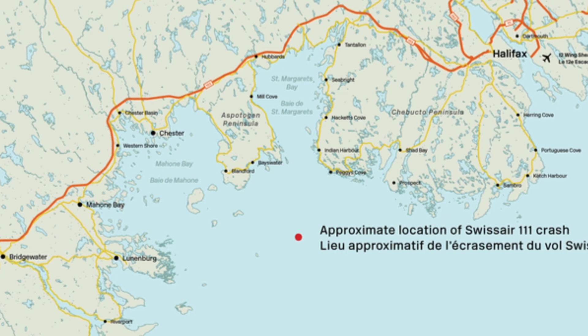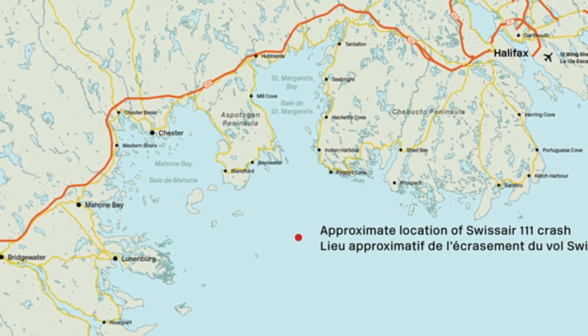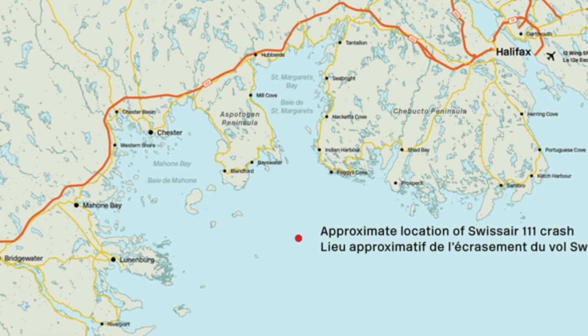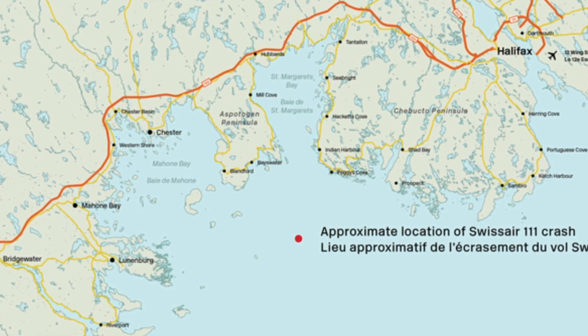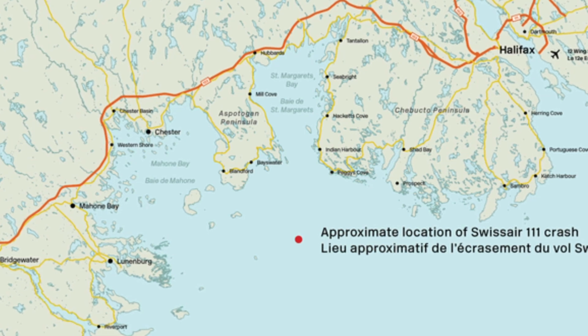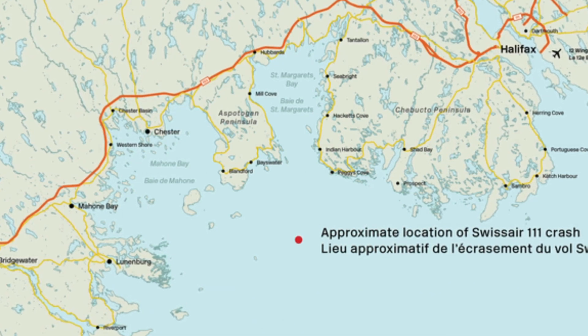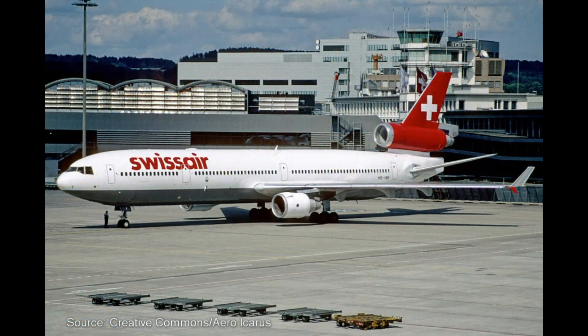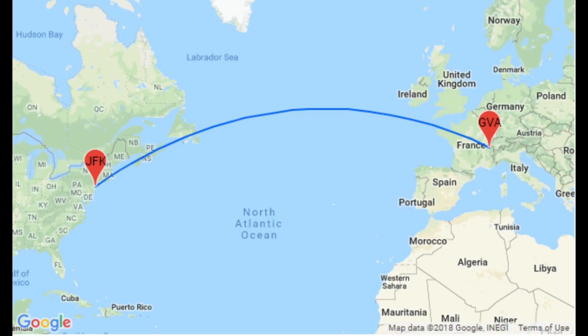On the evening of September 2nd, 1998, Swissair Flight 111 crashed into the Atlantic Ocean off the coast of Nova Scotia, Canada. All 229 passengers and crew on board lost their lives. The plane, a McDonnell Douglas MD-11, was en route from John F. Kennedy International Airport in New York to Geneva, Switzerland.